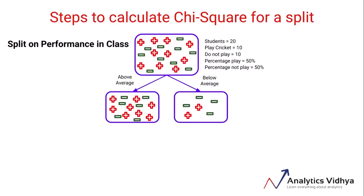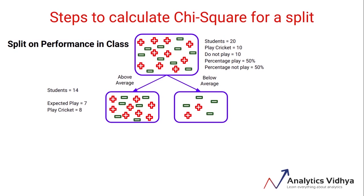If you recall, this is how the split on performance in class looks like — we've seen this before. There are a total of 20 students, and out of those 10 play cricket and 10 do not, so the percentage of students who play cricket is 50%. Now if we consider the above-average node, there are 14 students in it. Since the percentage of students who play cricket in the parent node is 50%, the expected number who play cricket will be 7, and the actual value is 8.